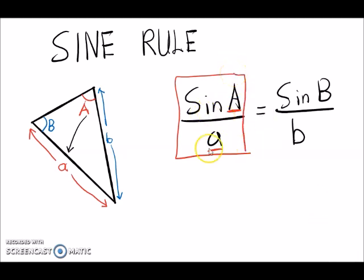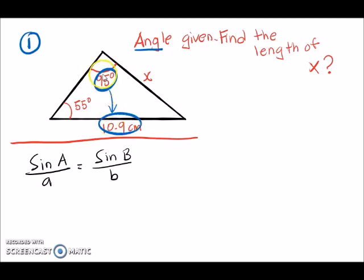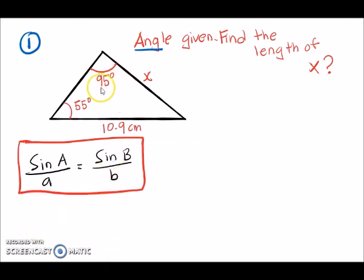We can use this rule when there is a pair. Let me do some examples. In question one, the angle is given and we have to find the length of x. Using the sine rule, we need to find a pair — the angle and the opposite length form a pair. The angle here is 95° and the length is 10.9.